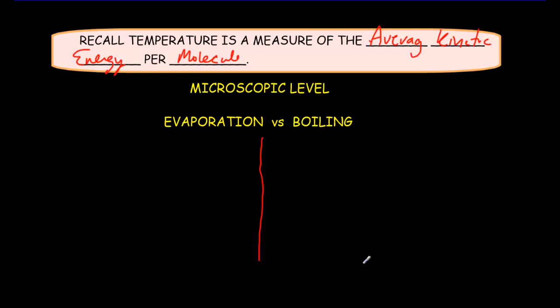So for boiling what's happening is that the average kinetic energy per molecule is enough to overcome the liquid bonds. And so suddenly, at a given temperature, the average kinetic energy is big enough to overcome the liquid bonds and boiling begins.